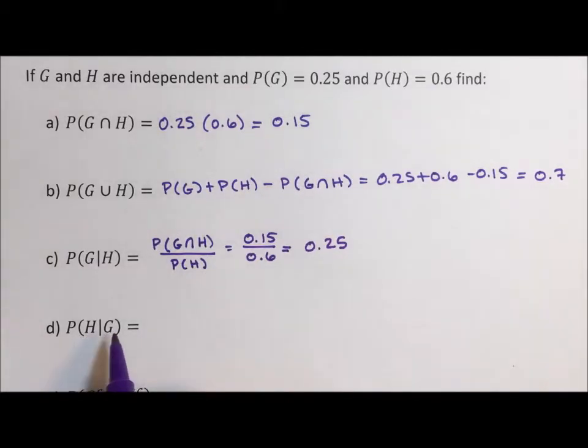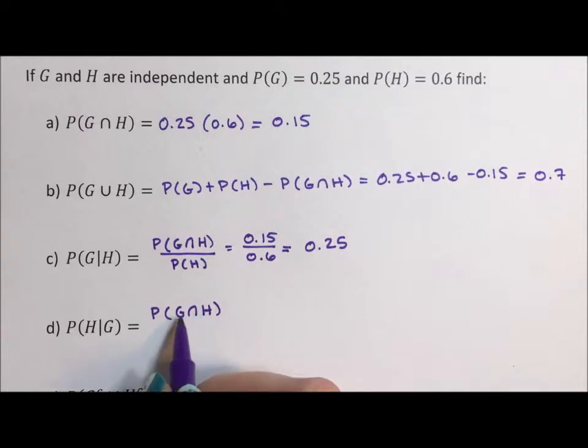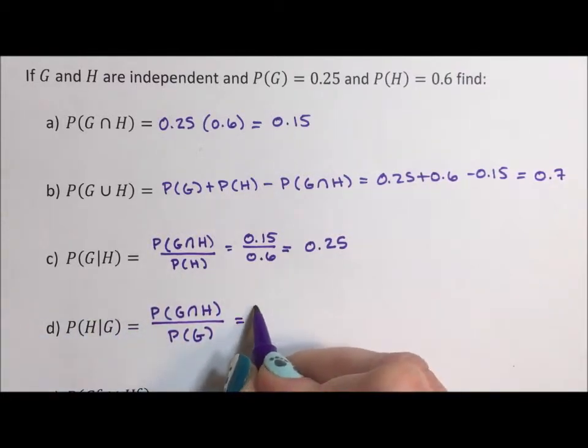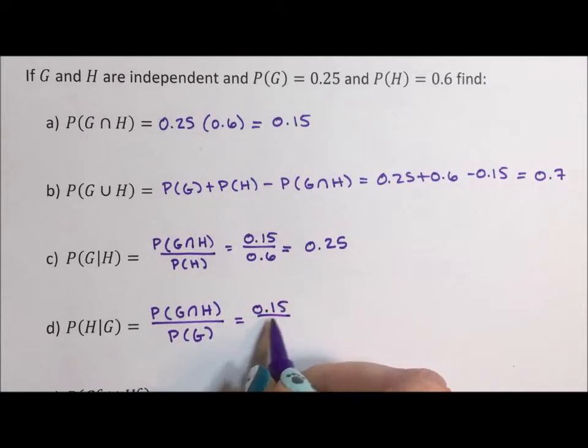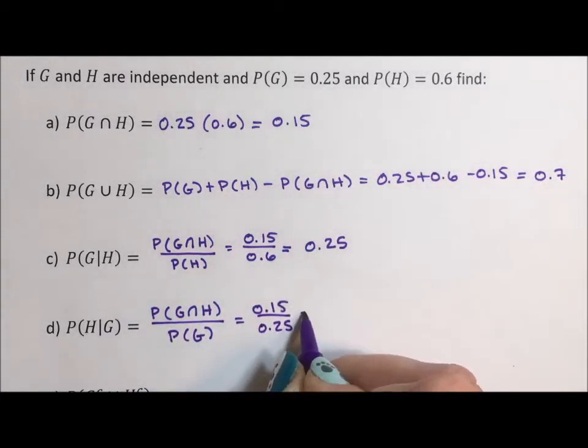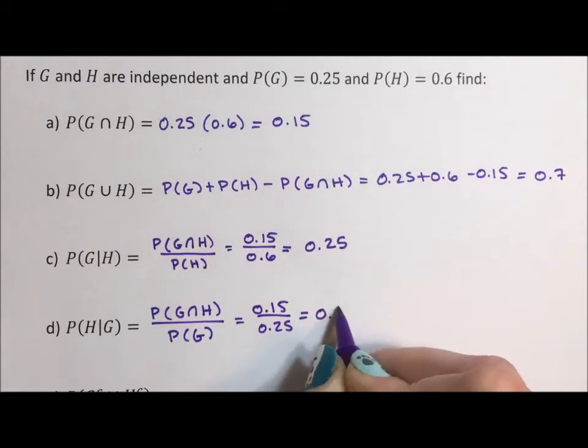The probability of H given G, again, it's going to be the probability of G intersection H, and G intersection H and H intersection G, it's the same probability, over the probability of G this time. The second letter is the denominator. That's 0.15 again, over the probability of G, that's 0.25. This is going to be 0.6.